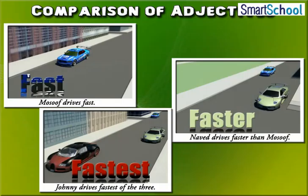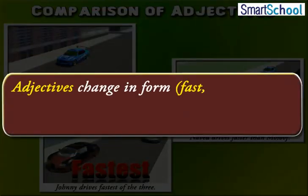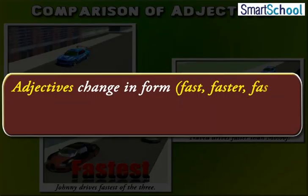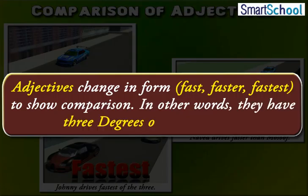Thus, we see that adjectives change in form — fast, faster, fastest — to show comparison. In other words, they have three degrees of comparison.